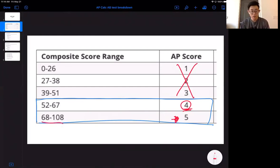To get a 5, you need to get a score of at least 68 or above. 108 is the highest composite score you can get on an AP Calc exam. 54 is about halfway. If you take 108 and divide by 2, you get 54. So if you get 50% on this exam, you actually end up with a 4, which is quite nice. You pretty much have to get only half of the test right in order to get some sort of college credit.